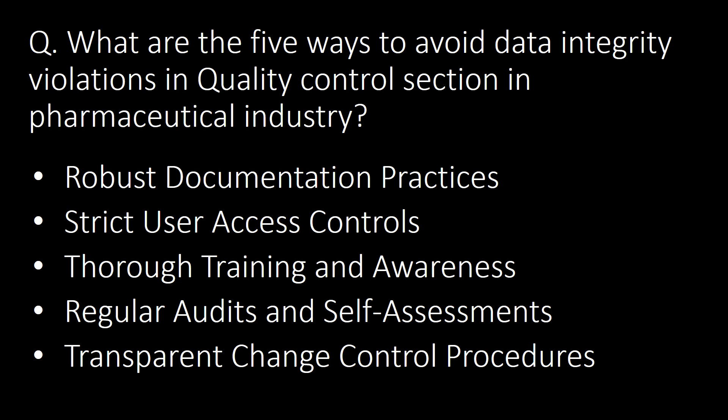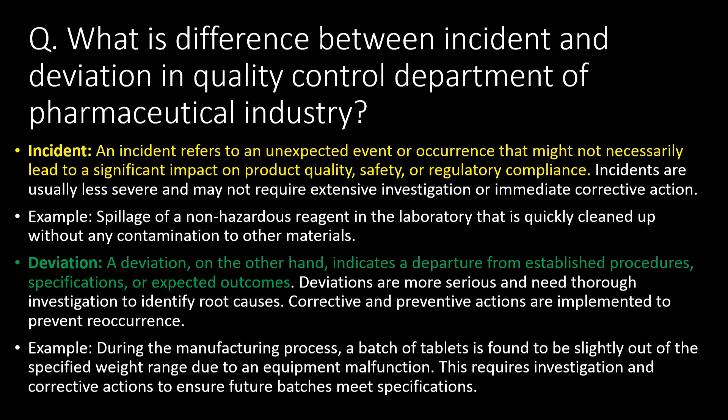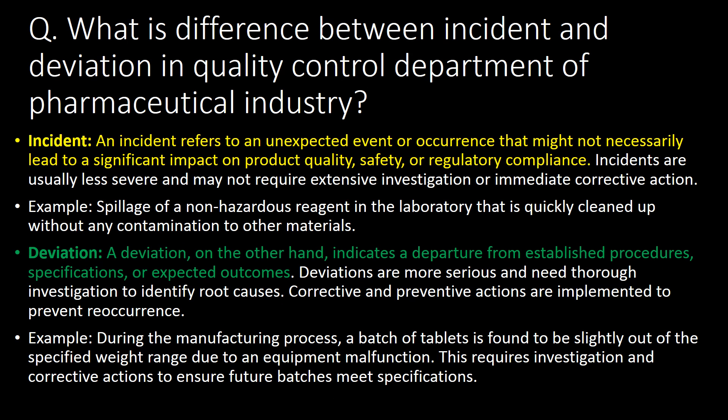What are the five ways to avoid data integrity violations in the quality control section of the pharmaceutical industry? The five ways are: first, robust documentation practices; second, strict user access controls; third, thorough training and awareness; fourth, regular audits and self-assessments; and fifth, transparent change control procedures.